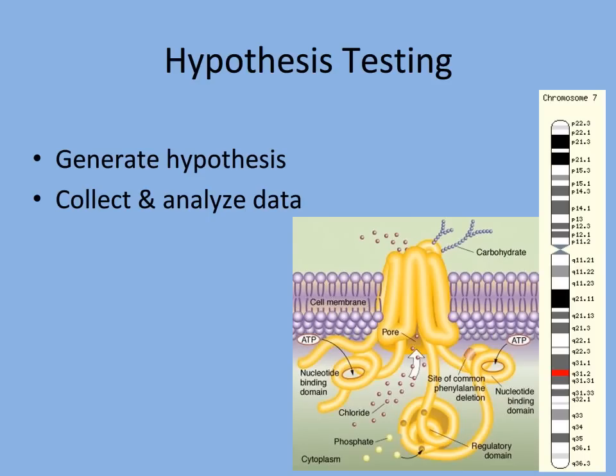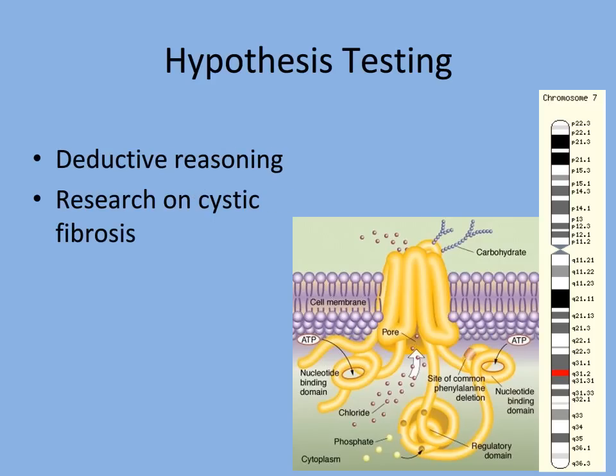We can also study life by testing hypotheses. This type of research is commonly done in a laboratory setting, where all factors in the experiment can be controlled. First, we generate a hypothesis, which is a possible explanation to the question we have about the subject. Then we perform an experiment to test our hypothesis. We must analyze the data collected to determine if our hypothesis was correct or not. In hypothesis testing, scientists use deductive reasoning to predict the results of an experiment based on logical assumptions.